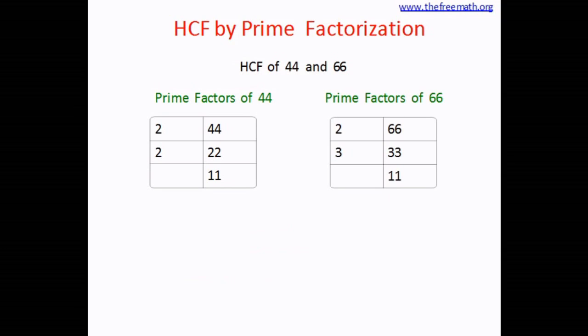In case of 66 divided by 2 answer is 33. 33 is not divisible by 2 so divide by 3 answer is 11. 11 is a prime number so we stop.